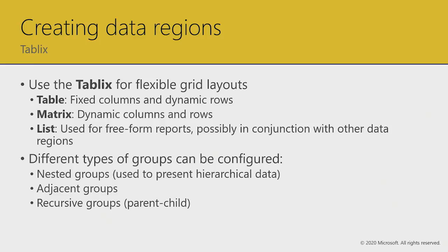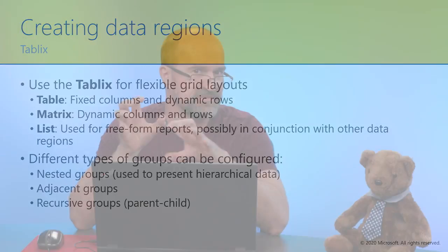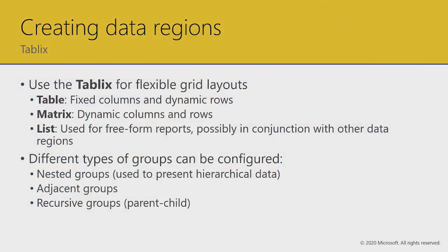The list is the simplest variant of the tablix — it's simply a rectangle that repeats for each of your groupings. When it comes to groupings of the tablix, there are three types: nested groupings (think drilling into a hierarchy from country to state to city), adjacent groupings (the same data represented horizontally by different groups), and recursive groups for parent-child data — the classic example being an employee table where each employee has a relationship to their manager.